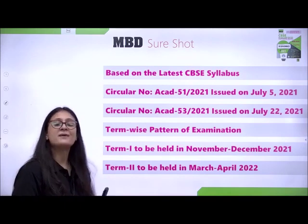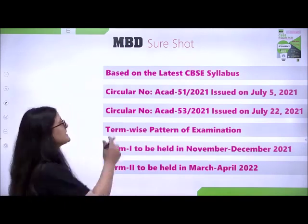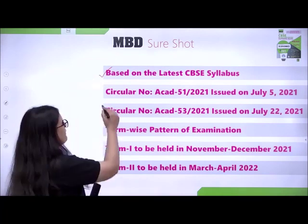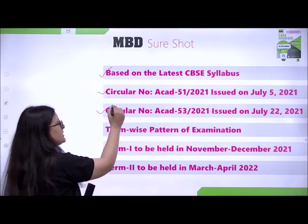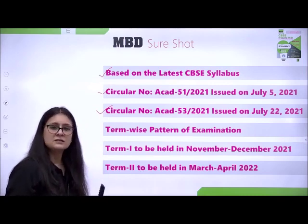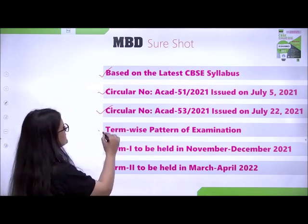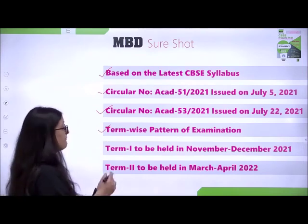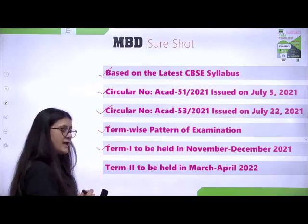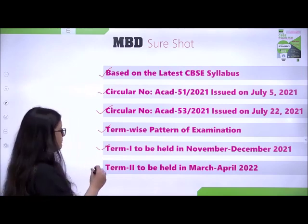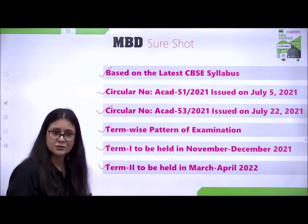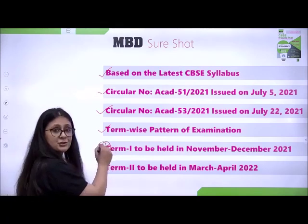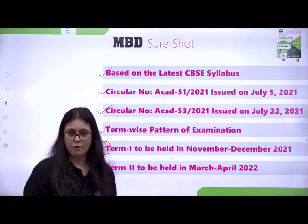First of all, it is based on the latest syllabus and guidelines issued by CBSE in its circulars issued on July 5 and July 22, according to which there will be a term-wise pattern of examination for session 2021-22. Term 1 exam will take place in November-December 2021 and Term 2 exam in March-April 2022. This book has been made for the Term 1 examination, which is to be conducted in only MCQ format.